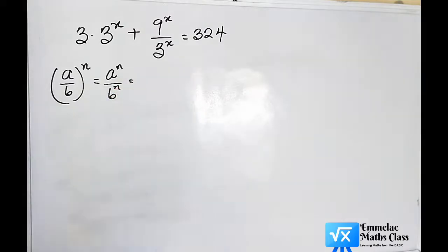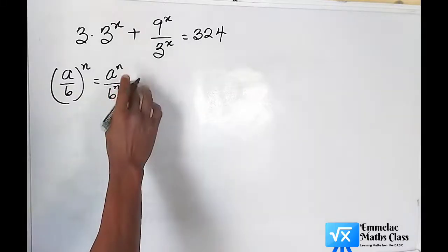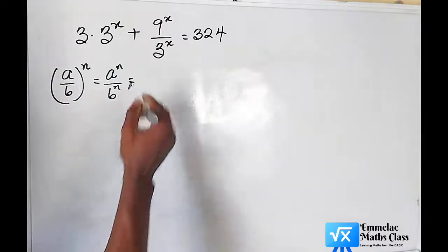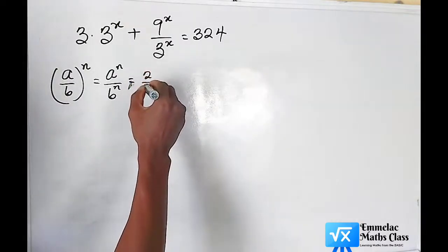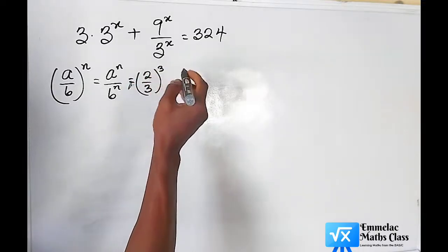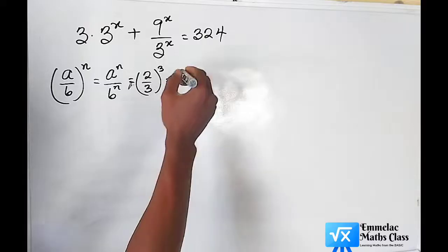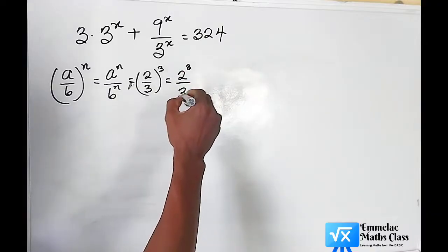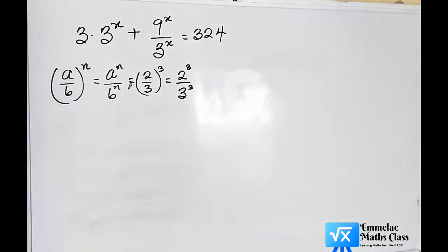To bring it into using real values, let us say 2 over 3 raised to the power of, let us say, 3. This implies that 2 raised to the power of 3 all over 3 raised to the power of 3. And if this is true, we can actually apply the rule here.